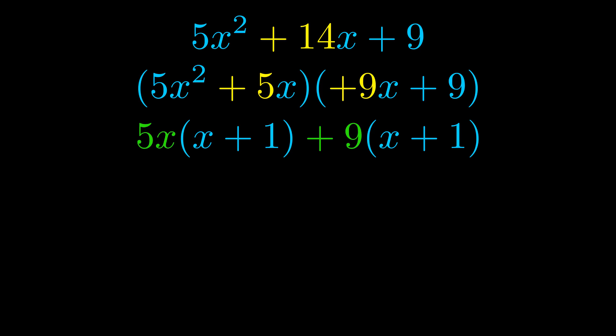Notice also how what remains inside of the parentheses is the same in both cases. The blue values are the same. Those blue values will become one of our factors and we will combine the two green values, the GCFs that we pulled out, to get the other one. And that is our fully factored equation.